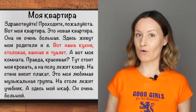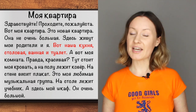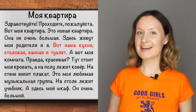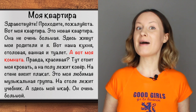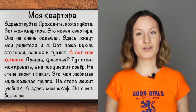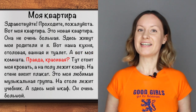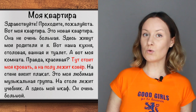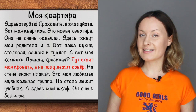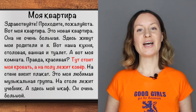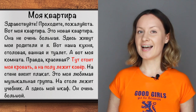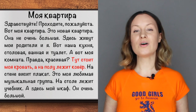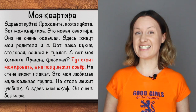Вот наша кухня, столовая, ванная и туалет — 'Here is our kitchen, dining room, bathroom, and toilet.' А вот моя комната — 'And here is my room.' Правда красивая? — 'It's beautiful, isn't it?' Тут стоит моя кровать, а на полу лежит ковёр — 'Here is my bed and on the floor there is a carpet.' Remember that тут is the same as здесь and means 'here.'